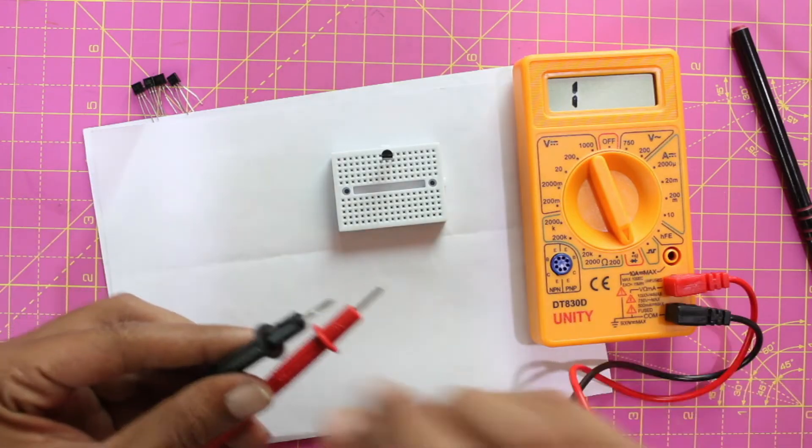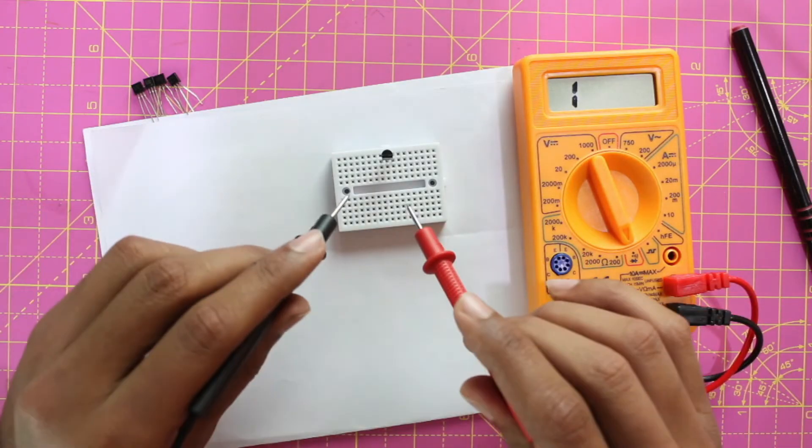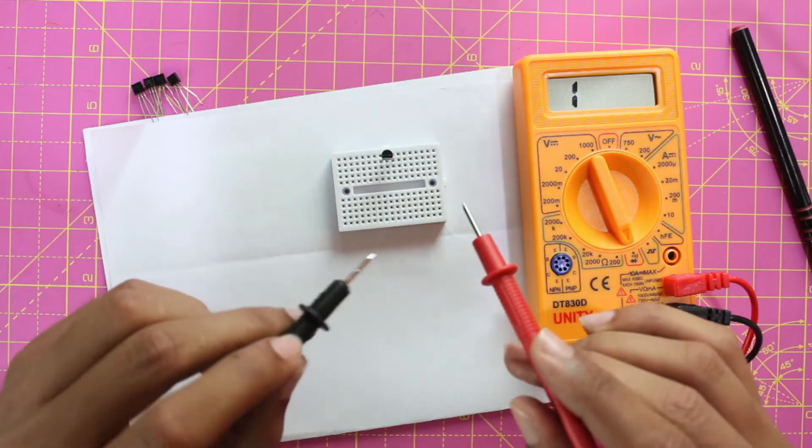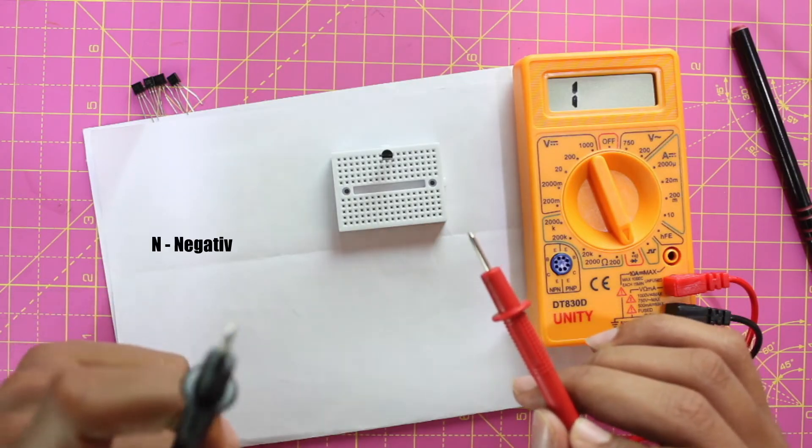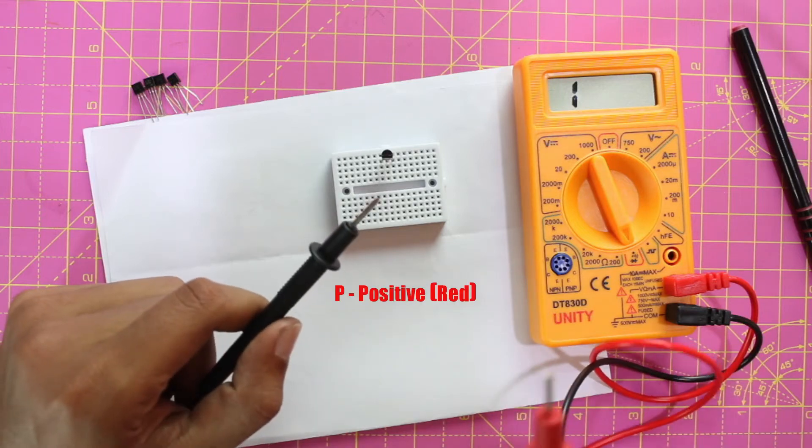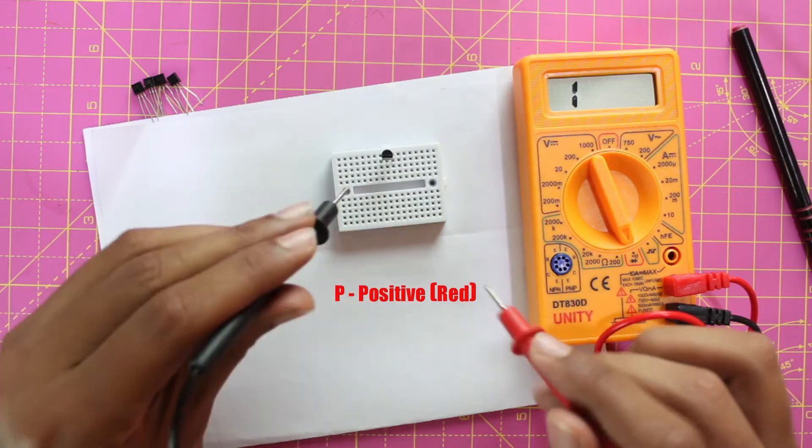Then take your probes and start probing the first two leads of your transistor. Now, for the sake of this video, I'm going to refer to this as N (negative black) and this as P (positive red).